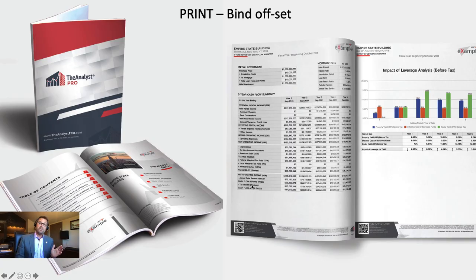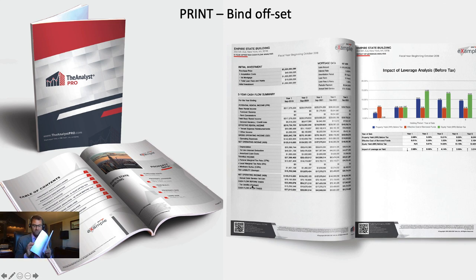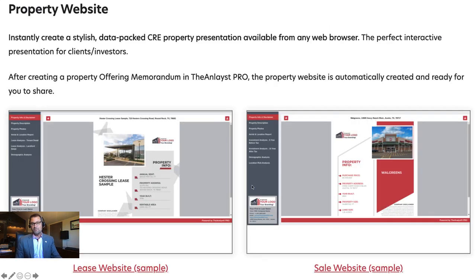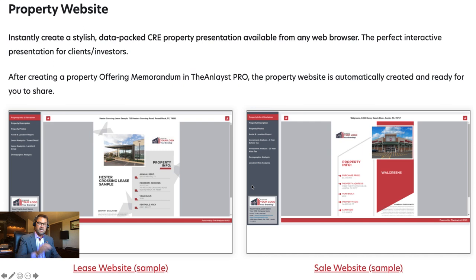Once you put the information in, we create a PDF. You can print this — we have an option called bind offset, print ready, so you can create a very comprehensive, professional offering memorandum in literally minutes, then print and bind it with offset margins for two-sided printing. We also combine it with a PDF you can email to a client, put on your website, and we even create a full property website automatically.